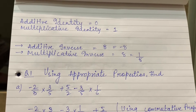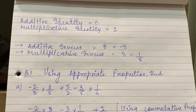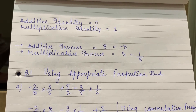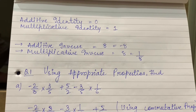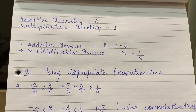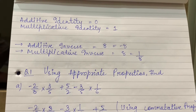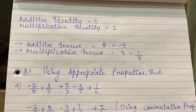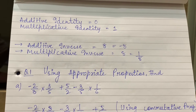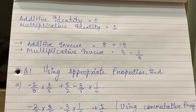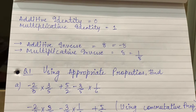I have explained this in detail in the first lecture. Now, using appropriate properties, find: minus 2 upon 3 into 3 upon 5, plus 5 upon 2, minus 3 upon 5 into 1 upon 6.